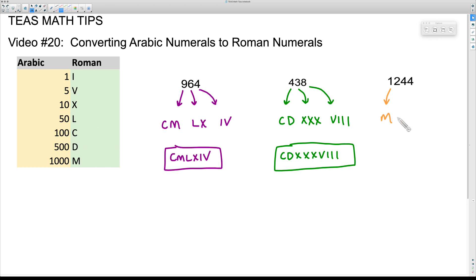Now the 40. What we don't want to do here for this 4 right here, the 4 in the tens place, we don't want to do X X X X because we don't want to put four of anything beside each other. So we can subtract 10 from 50. Let's put the X in front of the L. The X represents 10, the L represents 50, so 50 minus 10 gives us that 40.